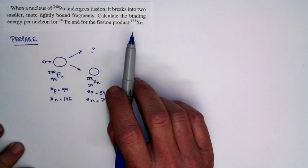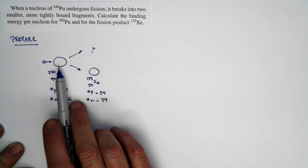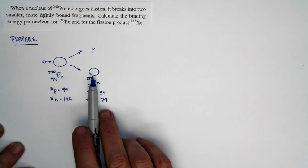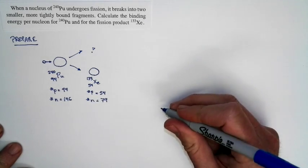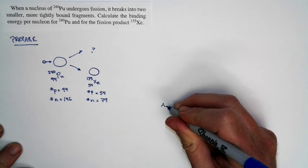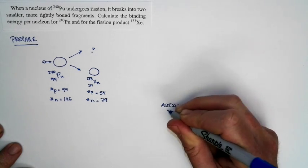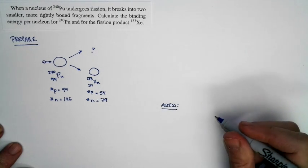The problem asks us to calculate the binding energy per nucleon for the original plutonium-240, and then for the xenon-133. Well, before we complete that calculation, let's do an assessment. So let's think ahead to the very end of the problem. How can we assess the result and see if it makes sense?